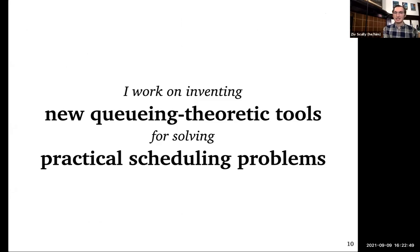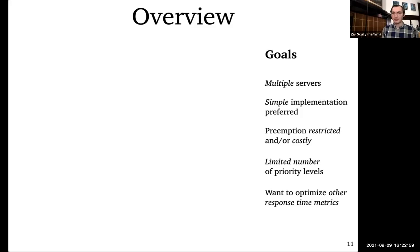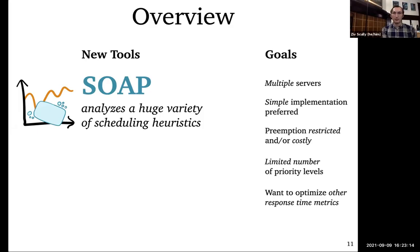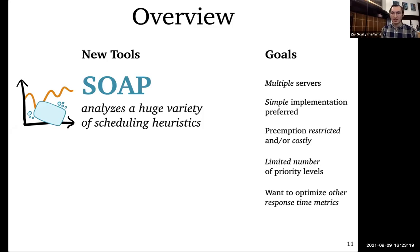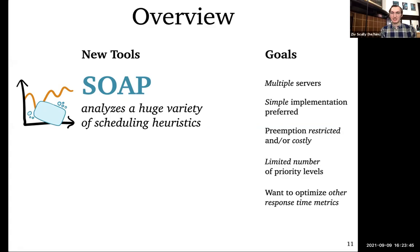My research at a high level involves inventing new queuing theory tools for addressing these practical obstacles in scheduling problems in real computer systems. I've introduced two big new tools. The first is called SOAP — a new way of analyzing scheduling policies, covering a much wider variety of policies than we previously knew how to analyze. Policies with limited priority levels or restricted preemption result in complicated scheduling policies that SOAP helps us analyze.